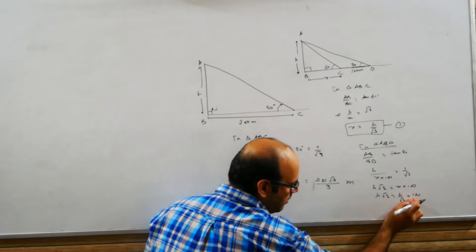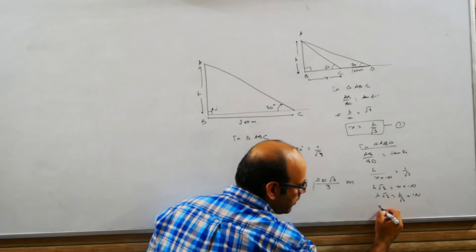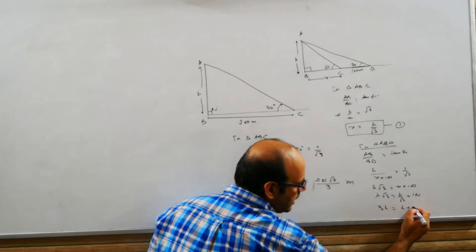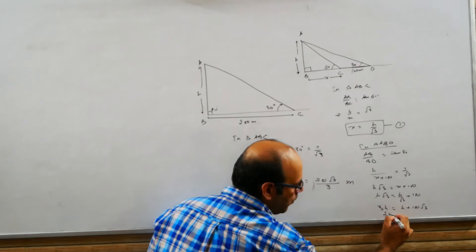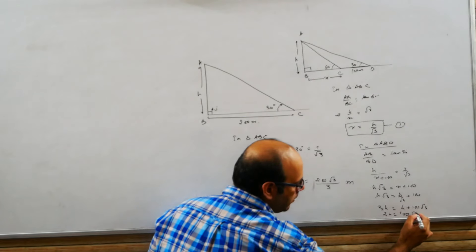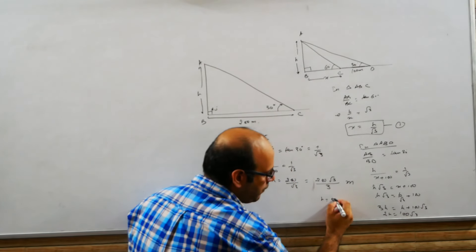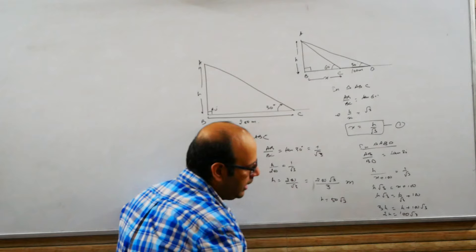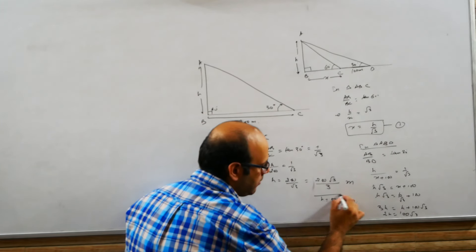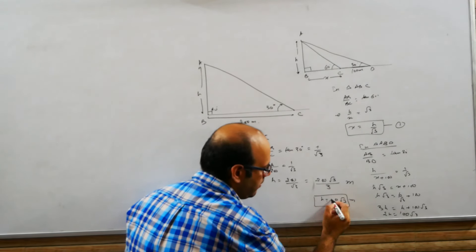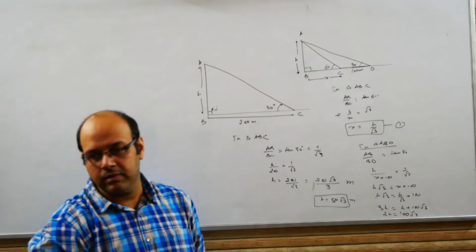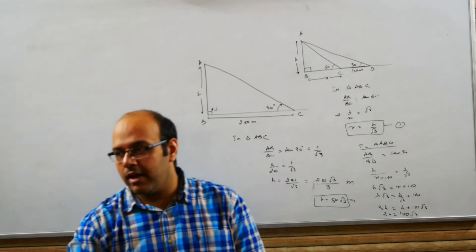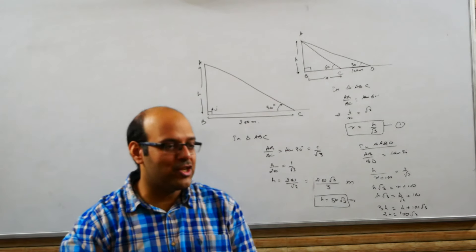So, 3H equals H plus 100 root 3. 2H equals 100 root 3. Therefore H equals 50 root 3 meters. So you have to use two trigonometric ratios. Excuse me.